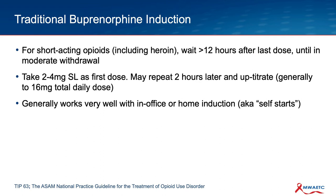A traditional induction varies from clinic to clinic, but in general you want to wait 8 to 12 hours from last use of a short-acting opioid until in mild to moderate withdrawal. Traditionally you'll take 2 to 4 milligrams as the first dose and repeat dosing every couple hours until you get to 12 to 16 milligrams total daily dose, or whatever dose controls your symptoms. We used to do a lot of in-office inductions, but there's a lot of evidence now and experience with home inductions that can be equally safe and efficacious and more convenient.